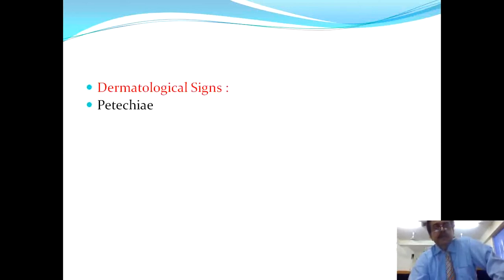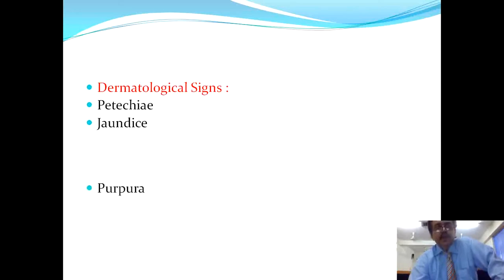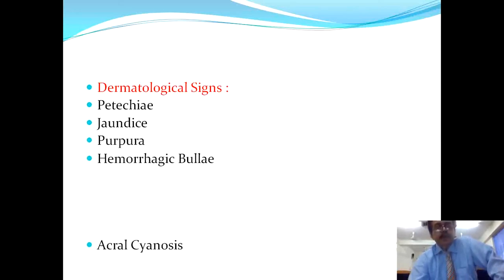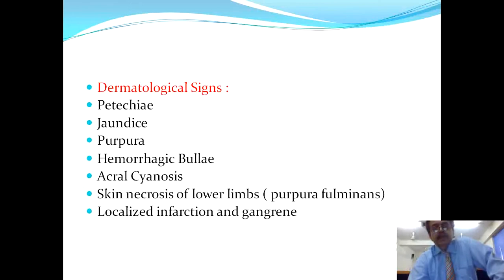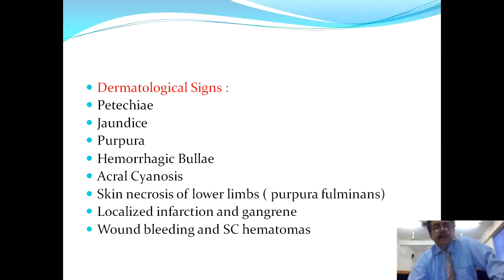Dermatological signs of DIC include petechiae, jaundice, purpura, hemorrhagic bullae, acral cyanosis, and skin necrosis of the lower limbs known as purpura fulminans. Ranging from petechiae to purpura fulminans, hemorrhagic bullae, purpura, and acral cyanosis are the dominant dermatological signs. Sometimes infarctions and gangrene can also be found in advanced DIC. Wound bleeding and subcutaneous hematomas may coexist in the same patient.